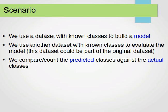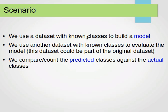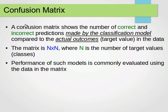Moving on to the very common approach — the first approach we're going to cover is what is known as the confusion matrix. The confusion matrix shows us the number of correct and incorrect predictions made by the classification model compared to the actual outcomes or target values in the data. We run the model on the dataset, get its predictions, and compare them against the actual classes — predicted against actual. That's what the confusion matrix contains: numbers of correct and incorrect predictions.